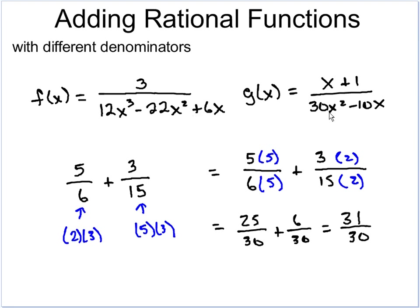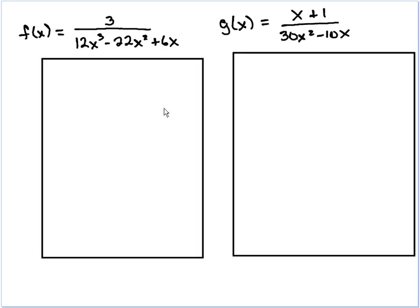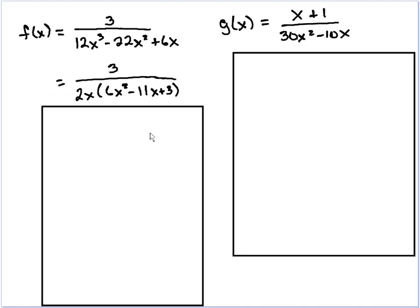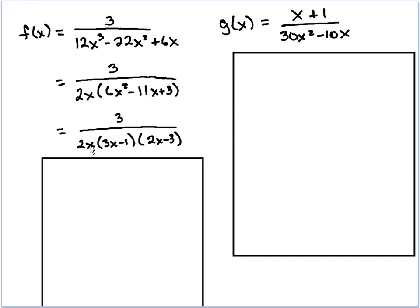Now let's look at these polynomial problems, because the denominators look complex. The first thing we need to do is factor those denominators so we can see what the pieces are and identify what's missing. For f(x), every term has a 2 and an x, so we factor out 2x and we're left with 6x² - 11x + 3. Factoring that further, we end up with 3 / [2x(3x - 1)(2x - 3)].